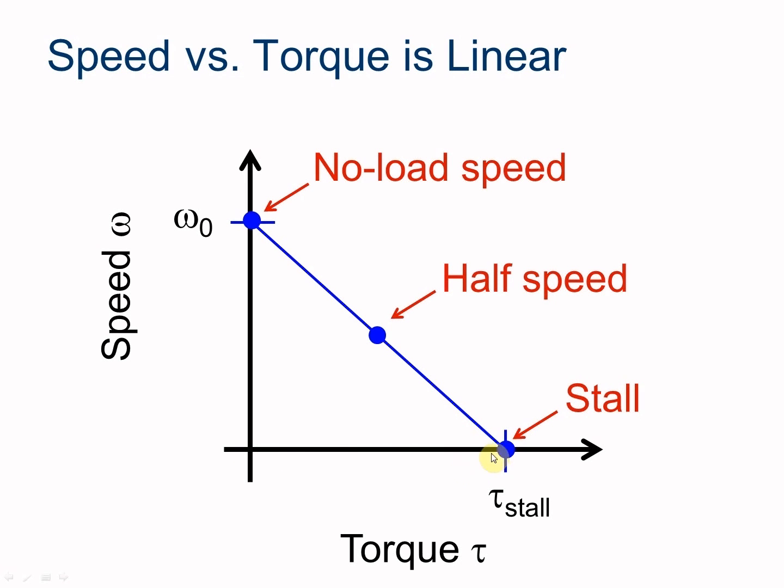As torque increases, we see a linear relationship here, that the speed is going to drop in a linear fashion the greater the torque gets, up until the point where we have so much torque that we end up with zero speed. And that is our stall torque, or tau stall. The fact that speed has a linear dependence on torque means that the graph of speed versus torque is always going to be a straight line.